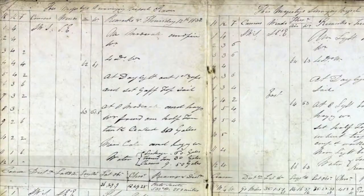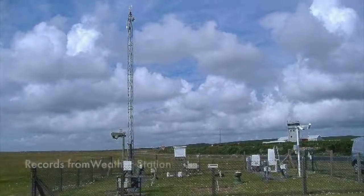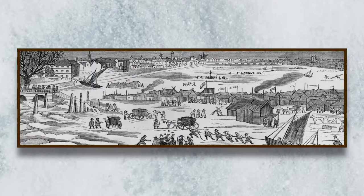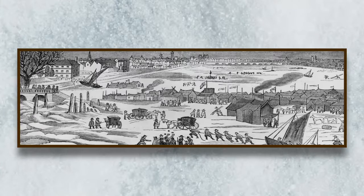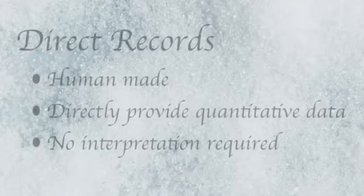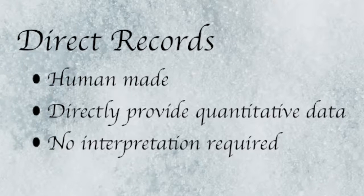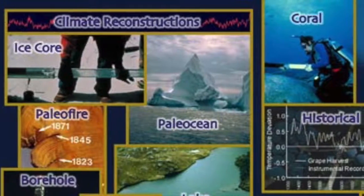This differentiates proxy records from direct records, as direct records are made by us humans. While paintings are human-made, they do not directly provide us with quantitative climate data and are therefore indirect proxy records. Direct records must be human-made and directly provide us with quantitative data with no interpretation required.